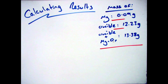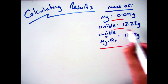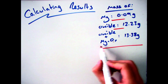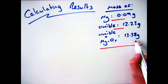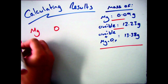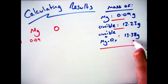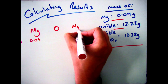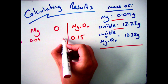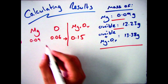Now I have my raw data. I had 0.09 grams of magnesium. My crucible weighed 13.23 grams. My crucible with my magnesium oxide weighed 13.38 grams. From that I can work out the mass of oxygen. Since my magnesium weighed 0.09 grams and the mass of magnesium oxide is 0.15 grams, taking the two numbers away leaves me with 0.06 grams of oxygen.